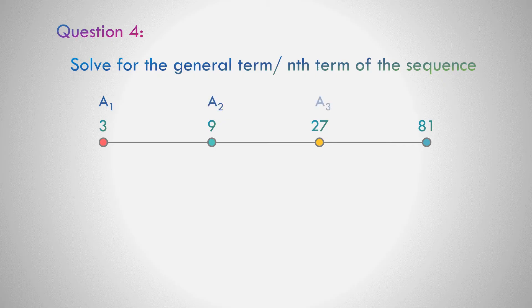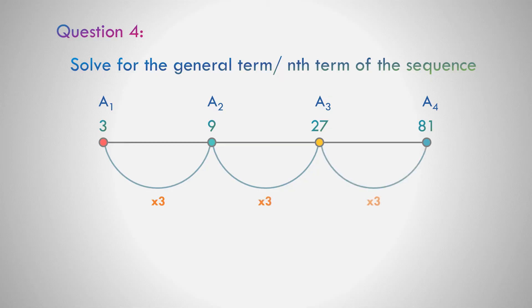Question number 4: In the sequence 3, 9, 27, and 81 — what do you think is the pattern? Correct. We multiply by 3 from the first up to the last term. Let us write the formula: a sub n equals 3 to the n.